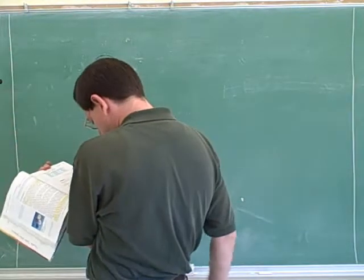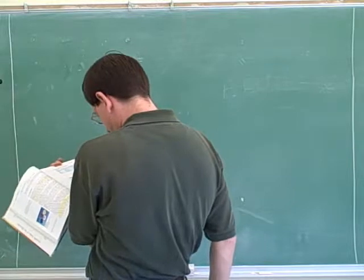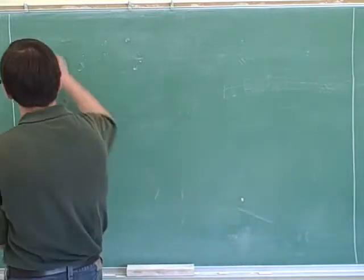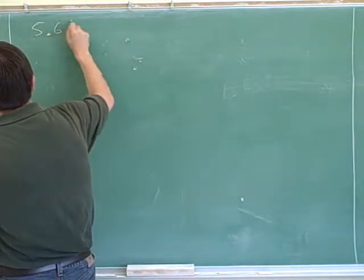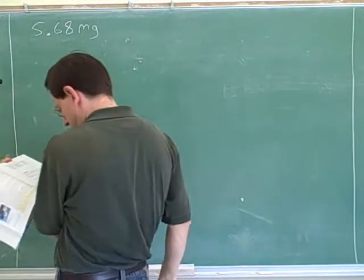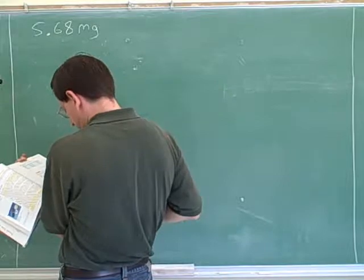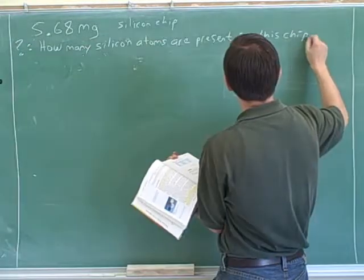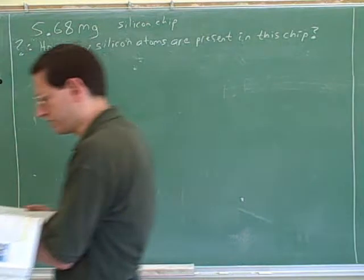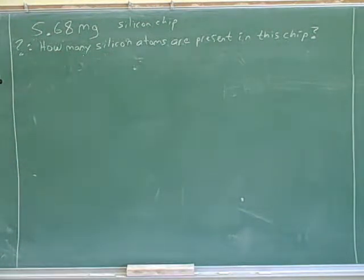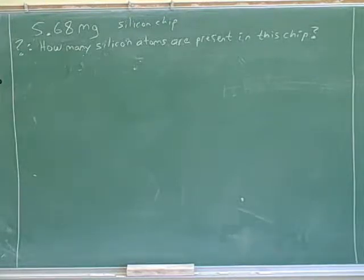A silicon chip used in an integrated circuit of a microcomputer has a mass of 5.68 milligrams. How many silicon atoms are present in this chip? Let's try working this out. I'm going to try to use as many of the techniques we used yesterday as we can. I'm going to find what the mass of silicon is.